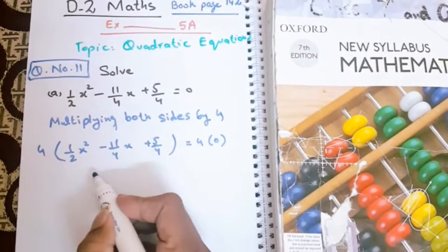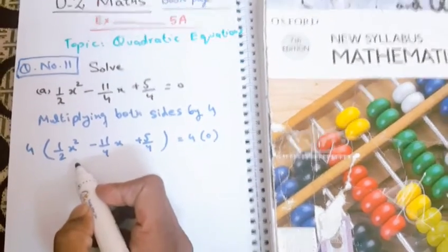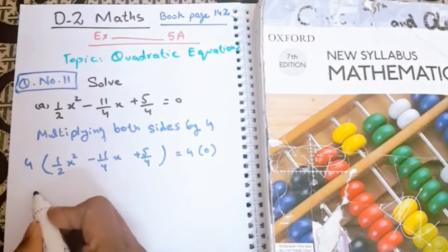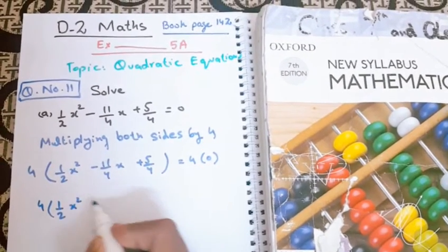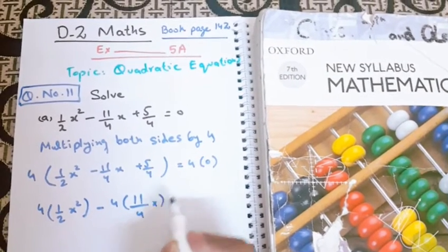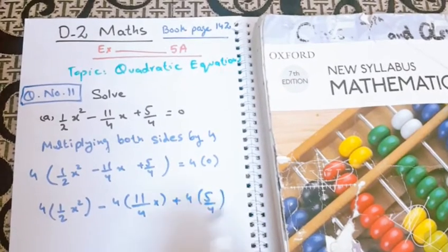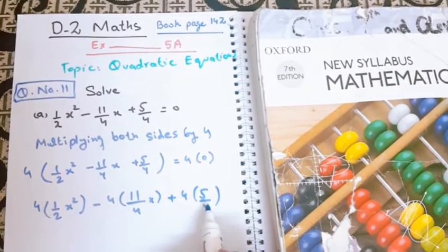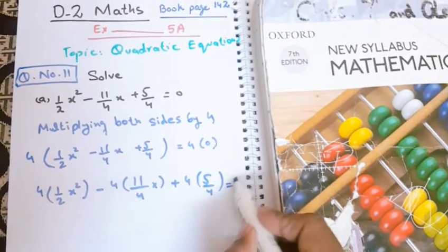4 will be multiplied with 1 over 2x square, 4 will be multiplied with 11 over 4x, and 4 will be multiplied with 5 over 4. Even this line is a formality. If you like, you can skip this line. 4 times 0 equals 0.